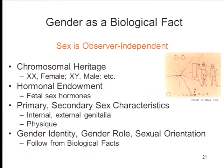A famous example is gender. You would think that something like gender is an objective fact about the world that is, in some sense, observer-independent. The argument goes: each of us has a particular chromosomal heritage — if you've got two X chromosomes, you're female; if you've got an X and a Y chromosome, you're male; if you've got some other combination, you're something else. Basically, your gender is determined by your chromosomal heritage.